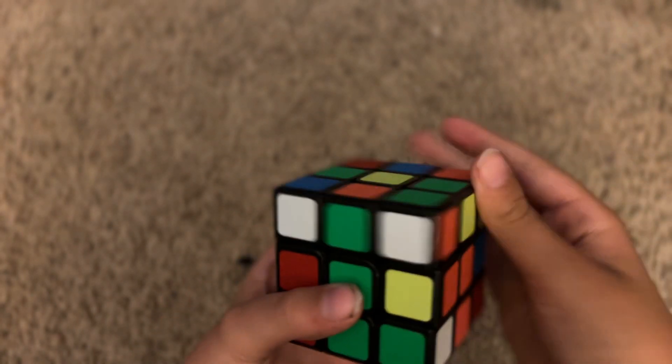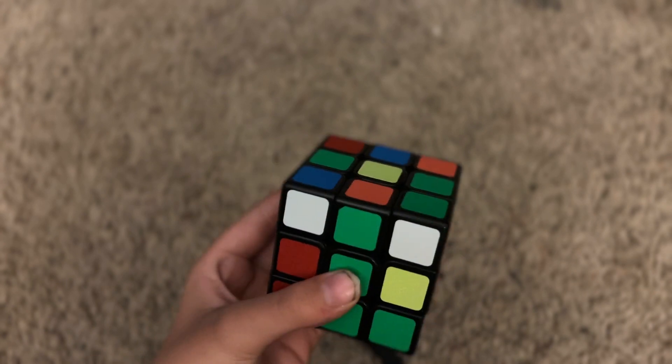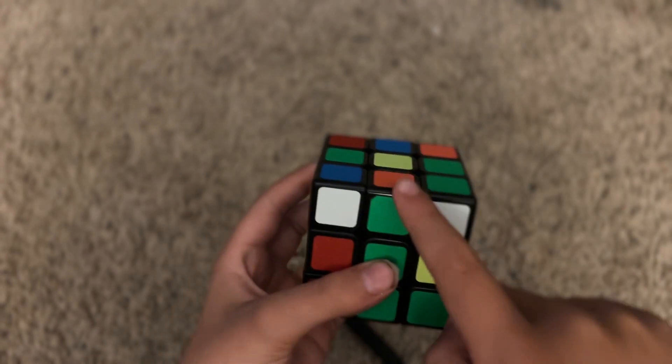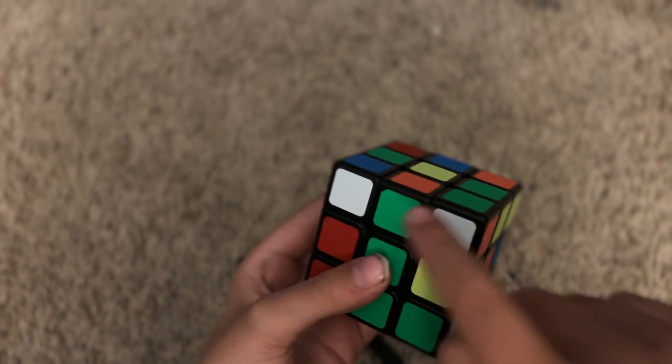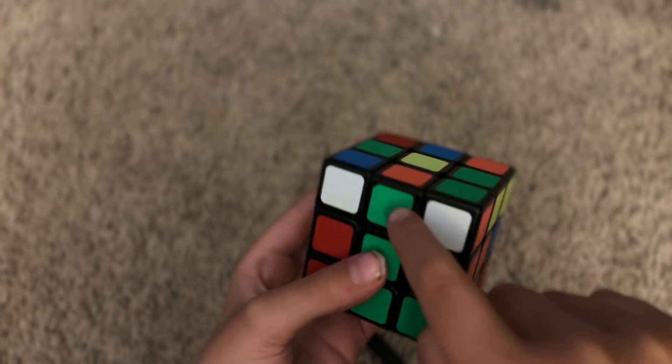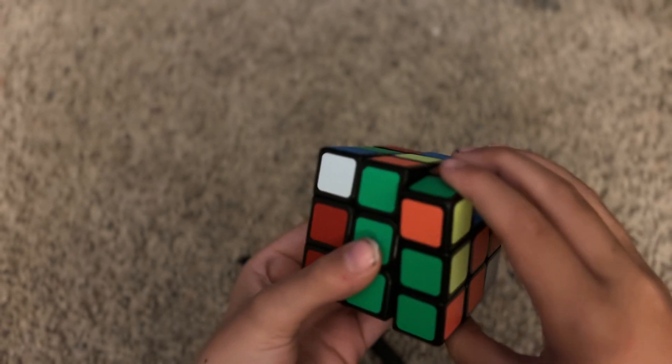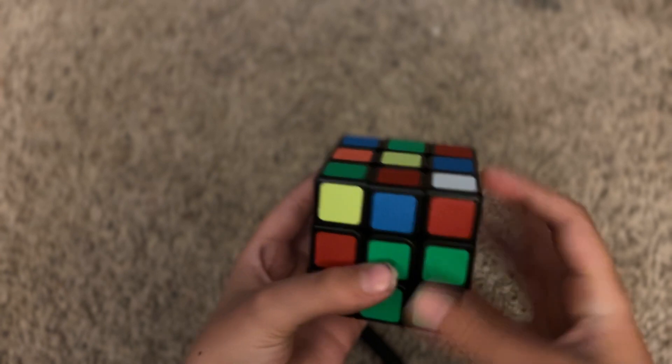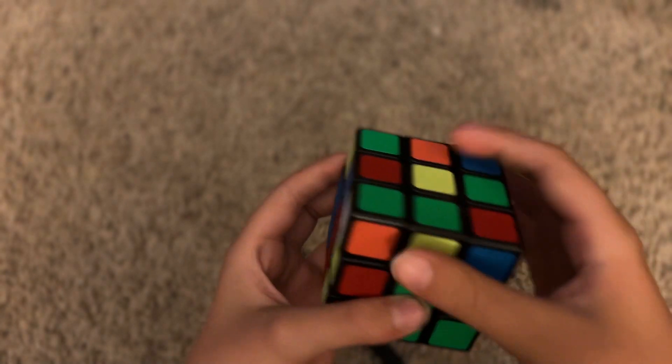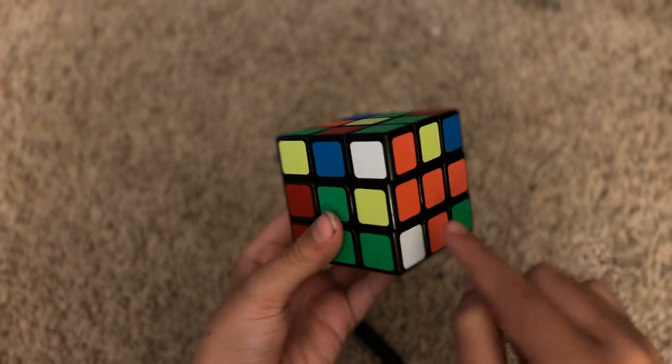F2L stands for first two layers. So if you have this problem to where, what you want to do is you want to make it to where these two are paired up. But if it's paired up like this, what you want to do is you want to move this down, move this to the left, move this up. Now we can put it in between the orange and the green.